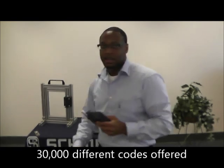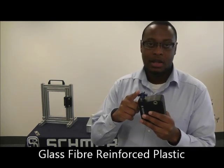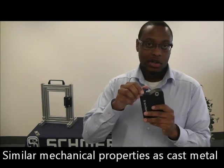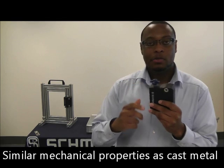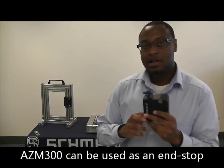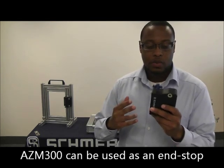When we look at the AZM300, one of the first things you may notice is the actual locking mechanism itself. This is made out of glass fiber reinforced plastic. That has the similar mechanical properties as cast metal. But we do not use cast metal because glass fiber reinforced plastic is more elastic, which makes it more better for actuator impact because the AZM300 can be used as an end stop.